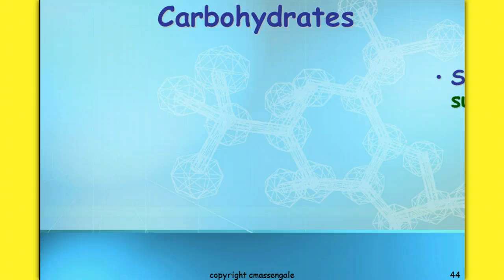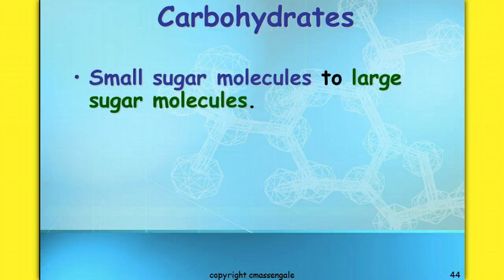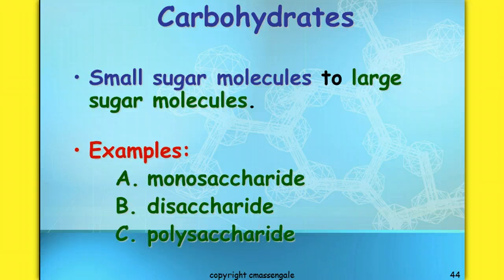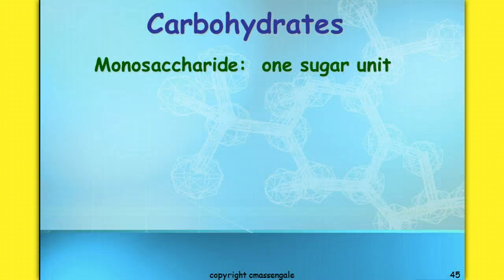Carbohydrates — a lot of people like carbs. This is where we take small sugar molecules and utilize them for energy, or they can be really big sugar molecules. Some examples include a monosaccharide, a disaccharide, or a polysaccharide. Each of those examples has a prefix and the same suffix — saccharide refers to sugar. A monosaccharide is one sugar unit — mono means one.